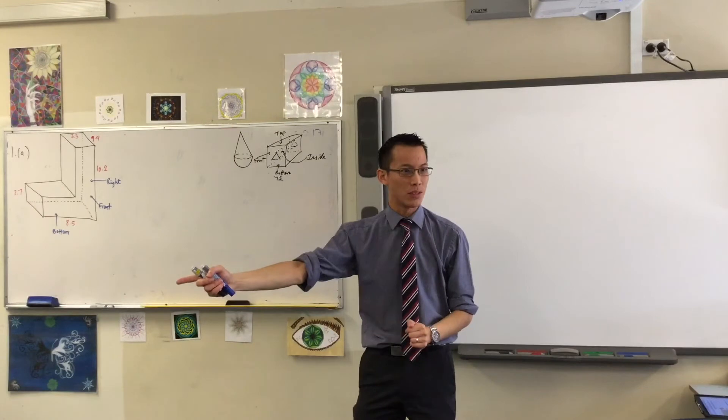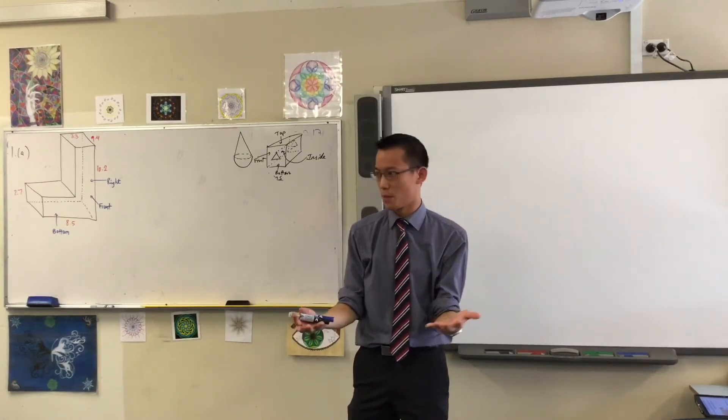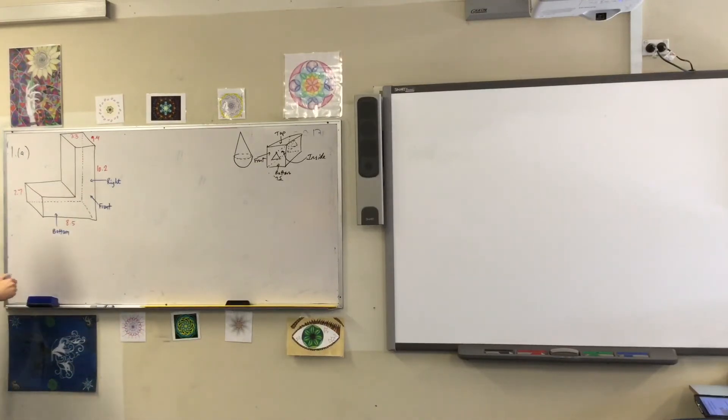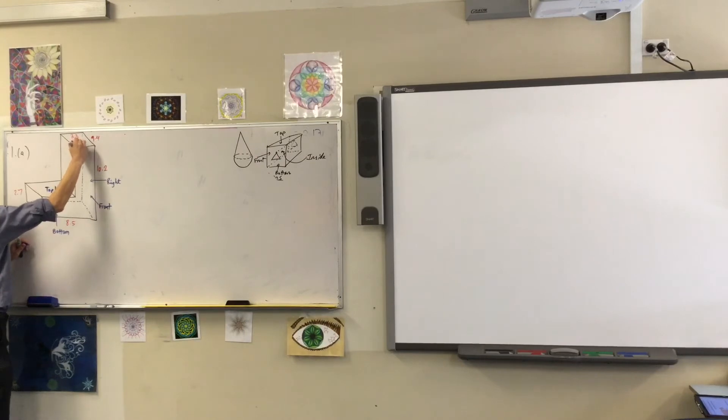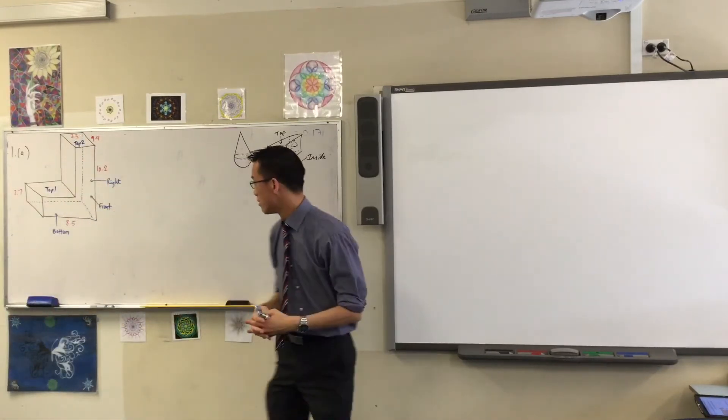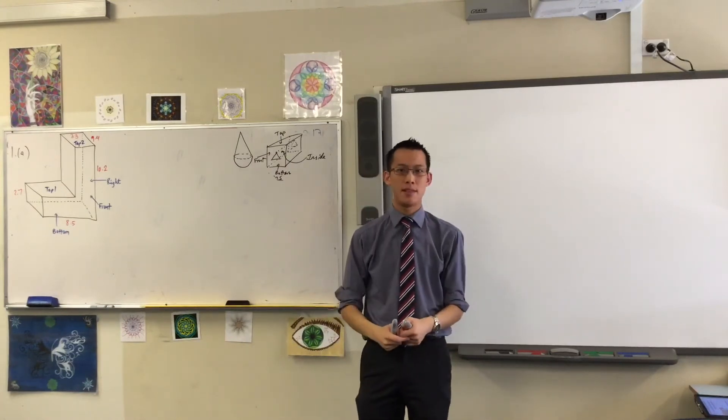They would become the bottom face, wouldn't they? Or they'd become the same size as the bottom face. Do you agree? So, therefore, rather than giving them independent names, which is confusing, I'm going to call this one top one and top two. So that I know, actually, you know what? When they go together, they'll be the same as the bottom. They're really two parts of the same thing.